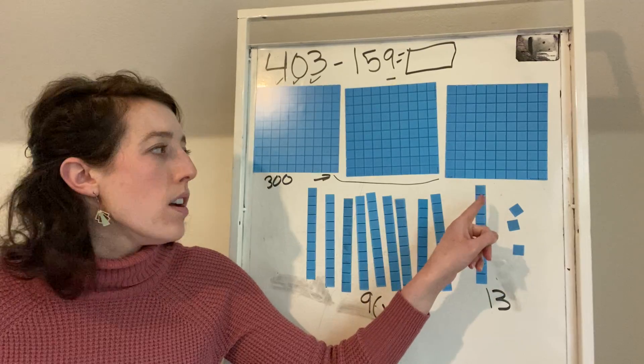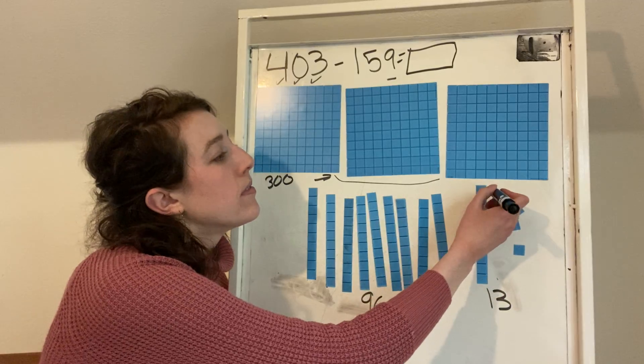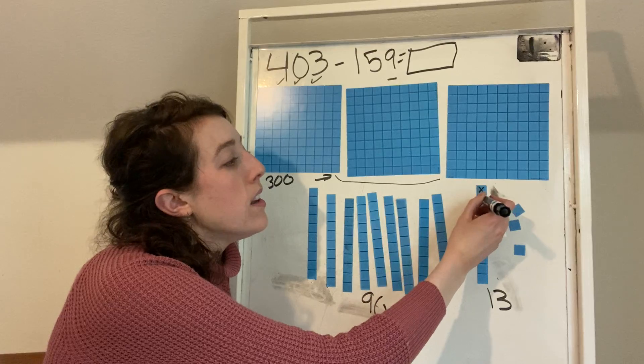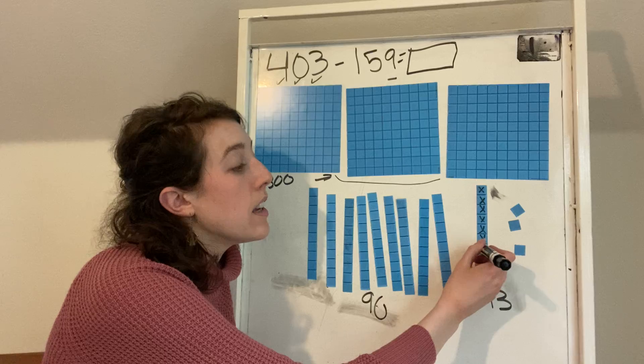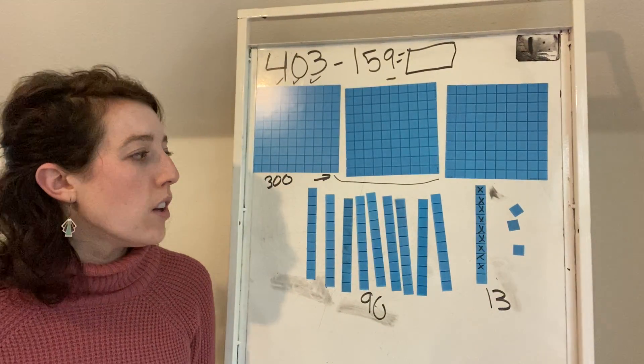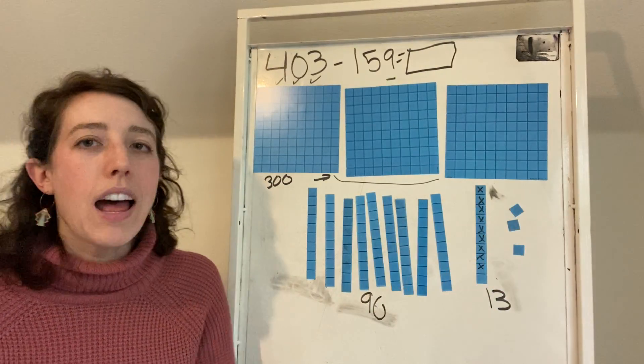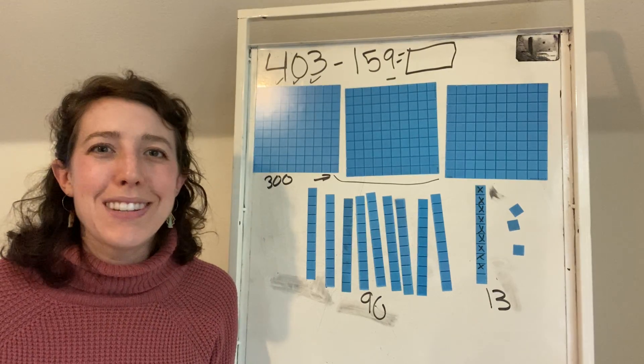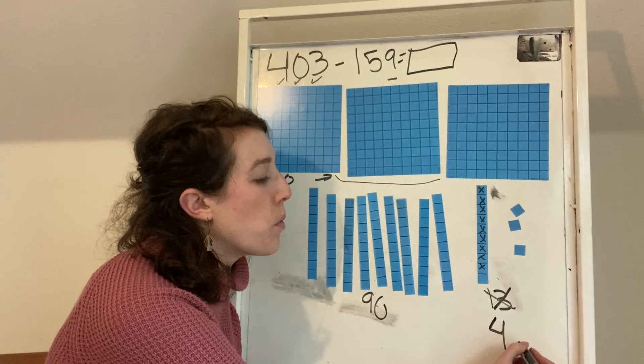I'm going to mark off my nine ones by xing off next to the 10 rod. One, two, three, four, five, six, seven, eight, nine. So look, how many ones do you guys have left? You have four ones. I don't have 13 ones anymore. I just have four. Now I have four ones.